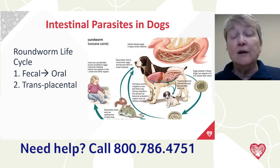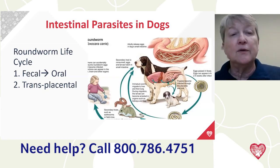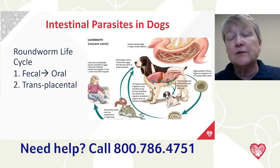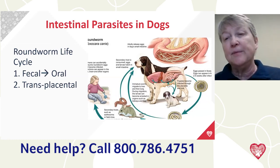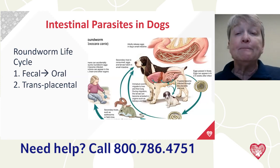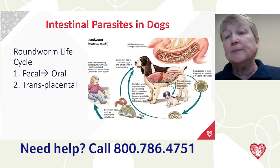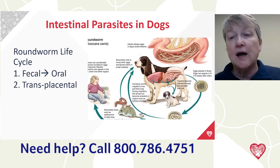Children can also ingest roundworm eggs — that's why we recommend keeping sandboxes covered. The most common transmission is fecal-oral, but roundworms can also be transmitted transplacentally in dogs — this is the only parasite I'm aware of that crosses the placenta. When a female is pregnant, if she ever had roundworms — even as a puppy, even if she tested negative, even after repeated deworming — the stress of pregnancy and lactation can reactivate those encysted parasites. They leave the cysts in her muscles, enter the bloodstream, cross the placenta, and infect the puppies.